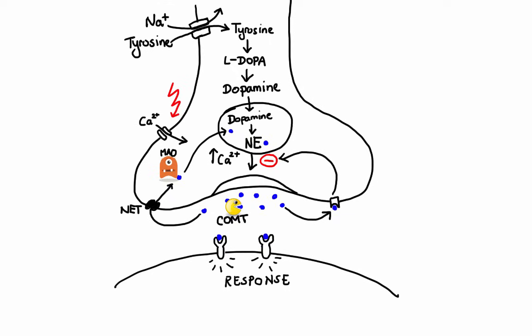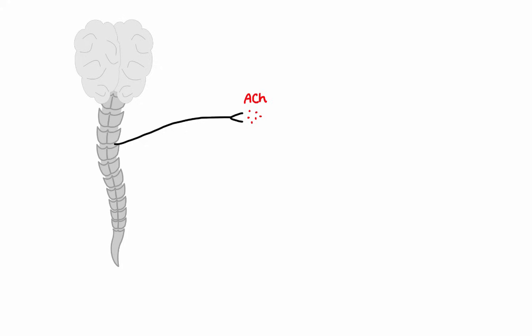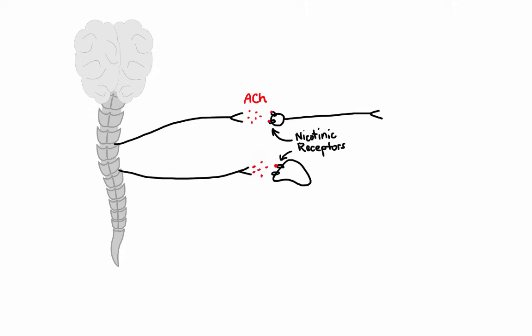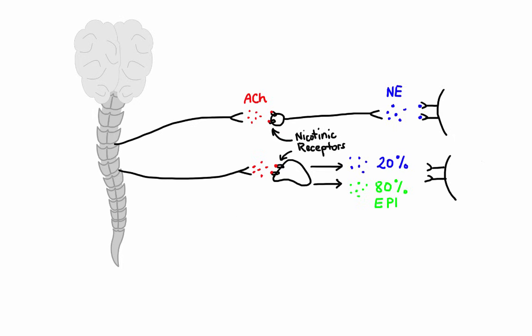Now let's talk about adrenergic receptors — that is, receptors which can be activated by norepinephrine, epinephrine, and adrenergic drugs. As you may recall from my previous video discussing the nervous system, sympathetic preganglionic neurons release acetylcholine, which then binds to nicotinic receptors on postganglionic adrenergic neurons, or nicotinic receptors on the adrenal medulla. The adrenergic neuron releases norepinephrine, while the adrenal gland releases approximately 20% norepinephrine and about 80% epinephrine. At the end, norepinephrine and epinephrine bind to receptors on effector organs. These receptors are called alpha and beta.